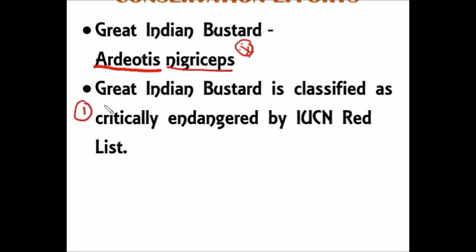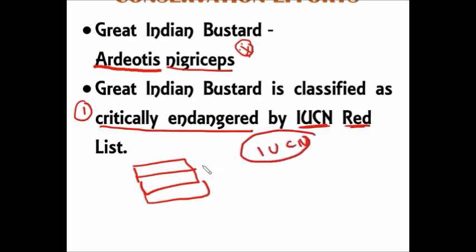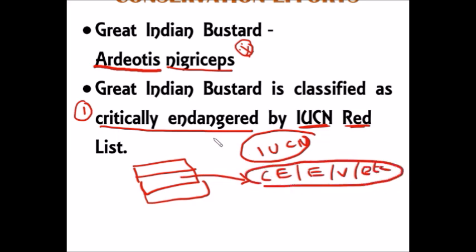The first prelims point in this video lecture is that the Great Indian Bustard is classified as critically endangered by the IUCN Red List. In these short video lectures, we are going to cover around 10 to 20 important species and their IUCN conservation status. For every species, the IUCN status — whether critically endangered, endangered, or vulnerable — is very important.